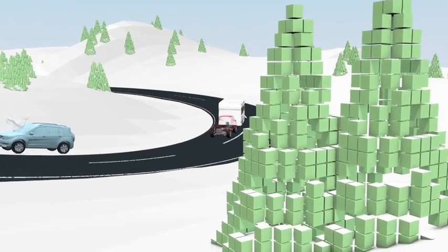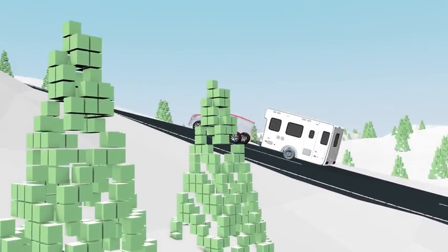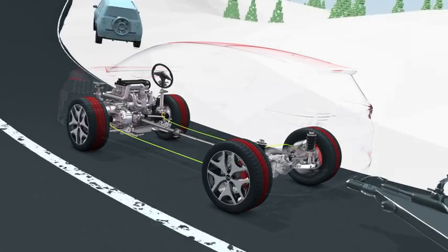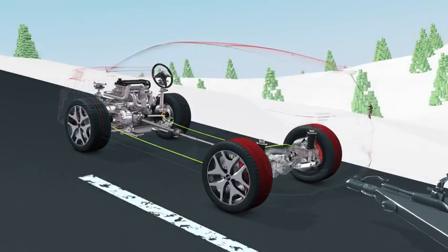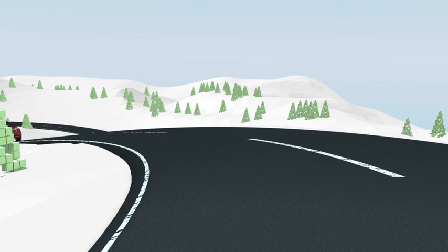Even when moving up a steep incline or when towing a trailer, Dynamax's high thermal capacity prevents the AWD system from overheating and subsequently the coupling from shutting down.